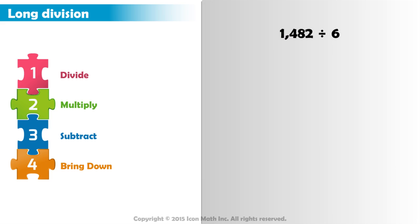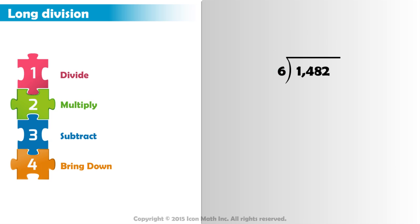Let's start the division. First, we draw the long division symbol. Then we write our dividend, 1,482, inside it. And our divisor, 6, on the left of it. The first step is to divide the first digit of our dividend, which is 1, by our divisor, 6.